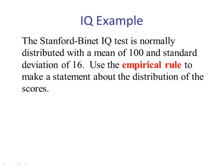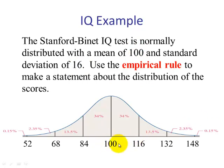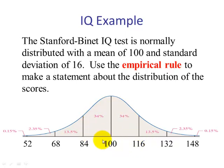If we draw a picture of this, the mean goes in the middle at 100. If we go one standard deviation below the mean — 100 minus 16 — we get 84. One standard deviation above the mean gives us 116. So we expect the area between scores of 84 and 116 to contain 68% of the scores.